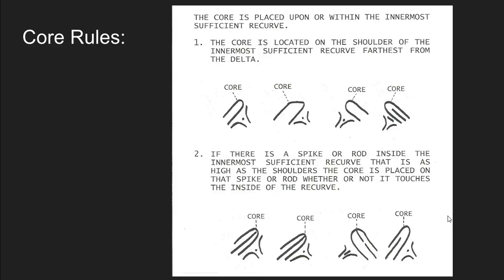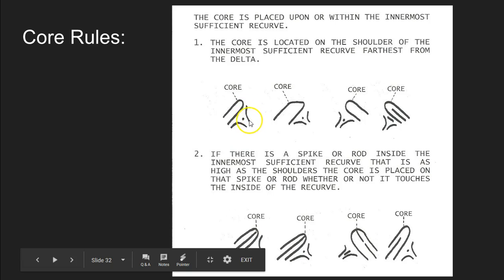The core of a fingerprint on a loop is placed upon or within the innermost sufficient recurve. We've got to use those rules about figuring out whether a recurve is good or not because we've got to find the innermost sufficient recurve. The core on the fingerprint is located on the shoulders of the innermost sufficient recurve, specifically on the shoulder that's farthest from the delta. So before we locate the core we have to first locate where the delta is.